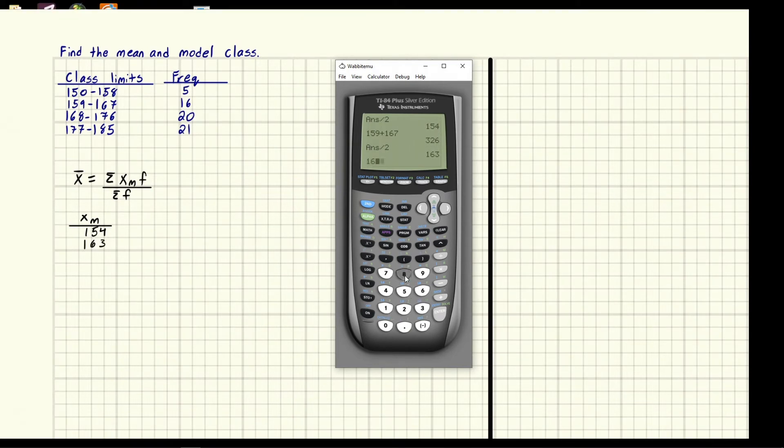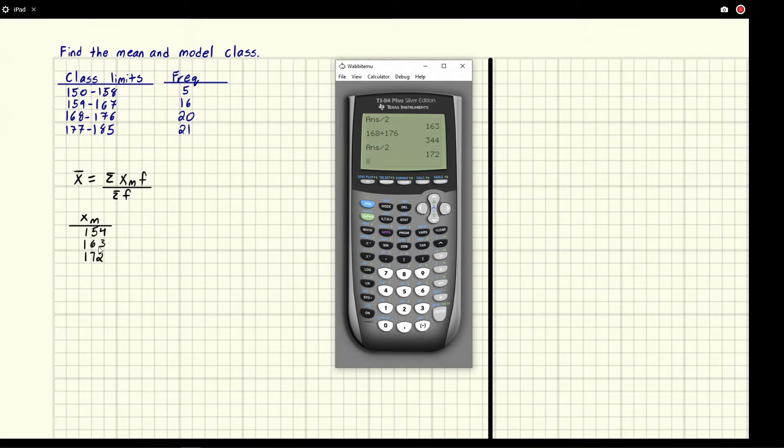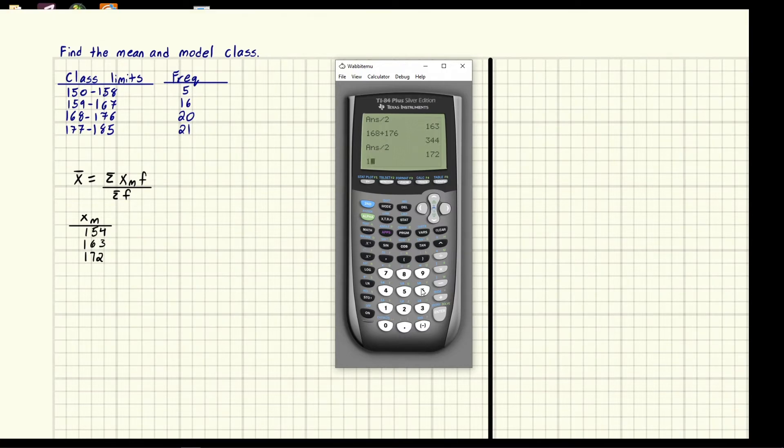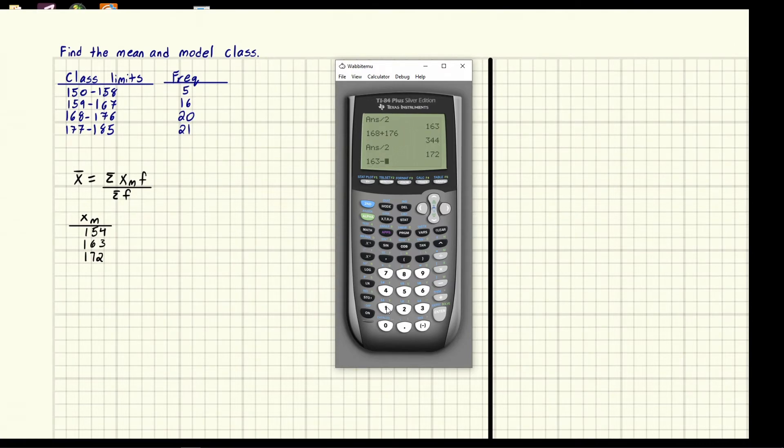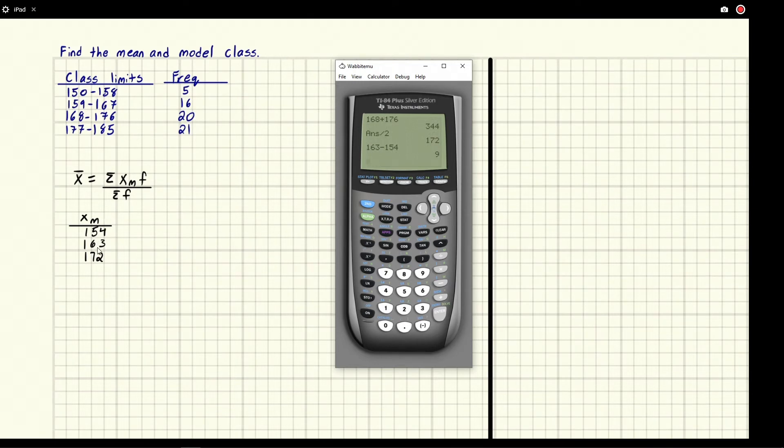Now we're going to do the next one 168 plus 176. That's going to give us a number and then we're going to divide by two and we get 172. Now you may notice each of these is the same amount apart meaning that the distance from 163 to 154 is going to be the same as the distance from 172 to 163. So if we add a lot more of these it would be advantageous to really quick find this and so we'd say that it's nine. The distance is nine.